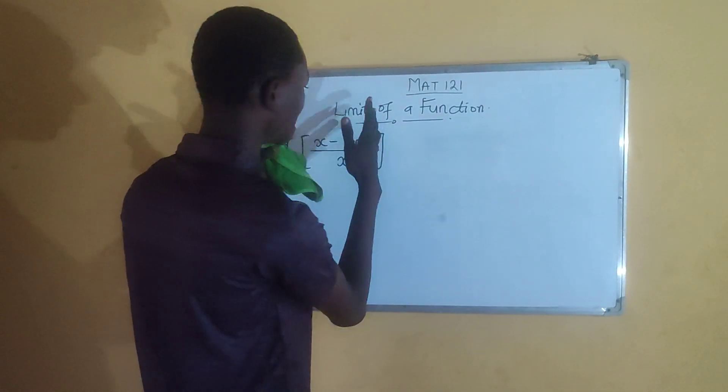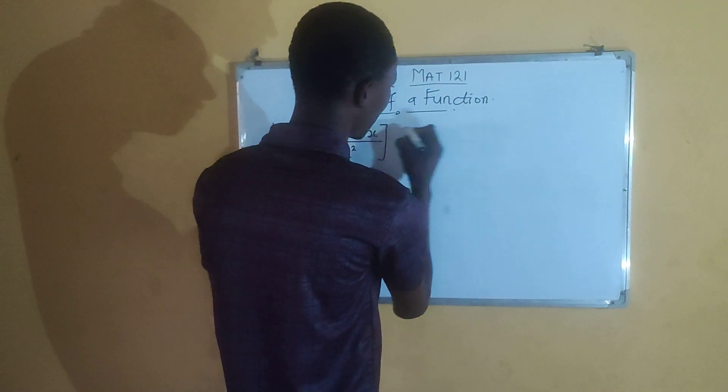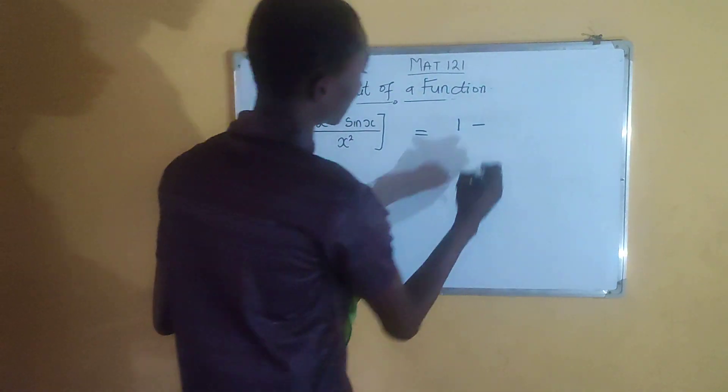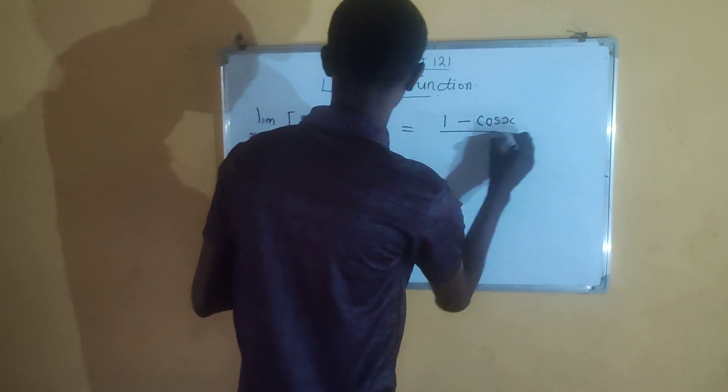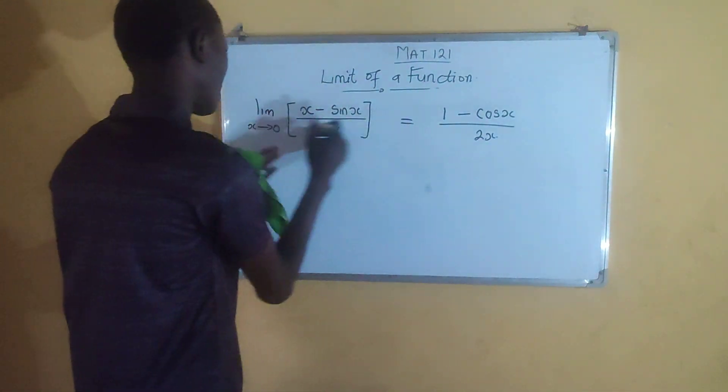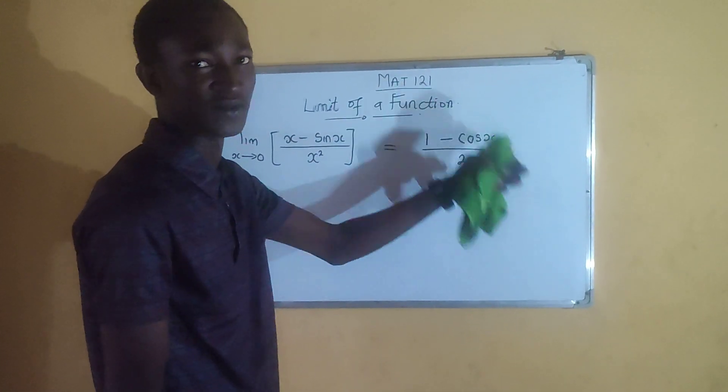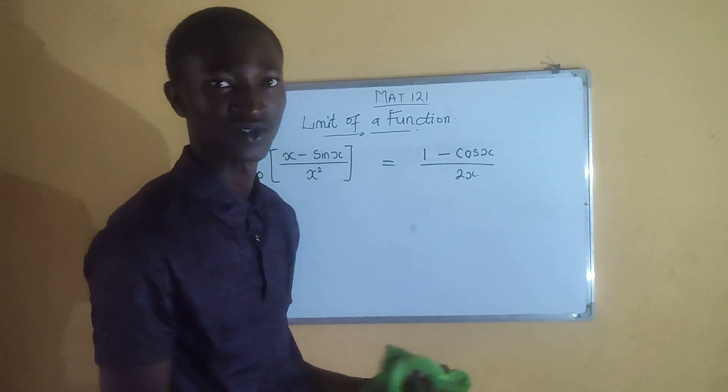So L'Hôpital's rule says that you differentiate this function. When you differentiate x, you have 1 minus. When you differentiate sine x, you have cos x. So 1 minus cos x, then divided by, when you differentiate x squared, you have 2x. So you notice that when you limit this to 0, if you put 0 here, you still have 2 times 0 is 0 at the denominator again. So you have to apply L'Hôpital's rule again,